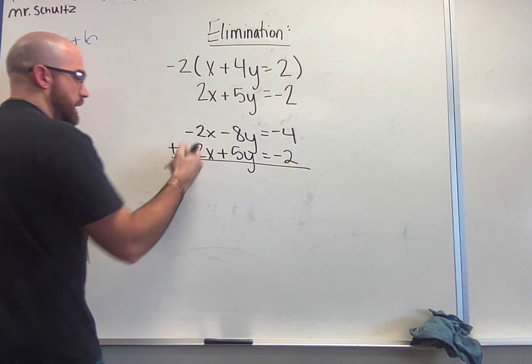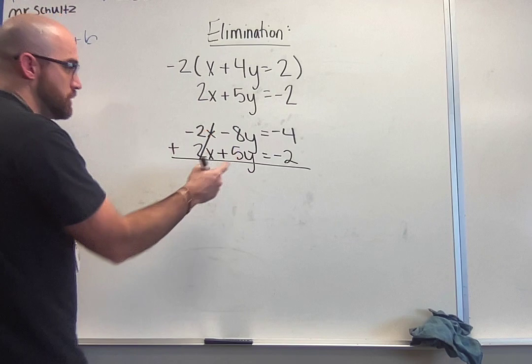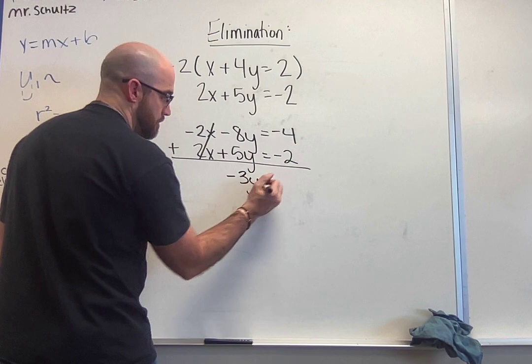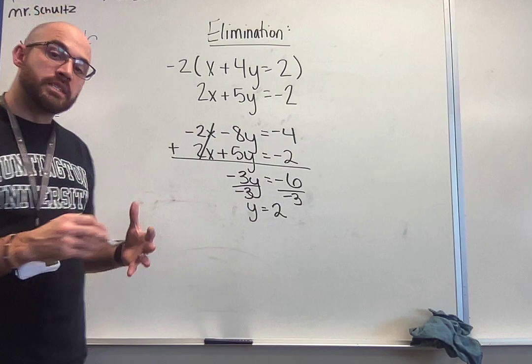Here when I do this problem, negative 2 plus 2 will cancel out or give us a 0. That's the whole reason why it's called elimination, we're eliminating one of our variables. So we've now eliminated our x. We can continue solving for y. I have -8 plus 5 gets me -3y. Here, -4 plus -2 gets me -6. We can divide both of these by negative 3, so I get y = 2.